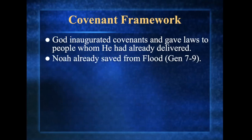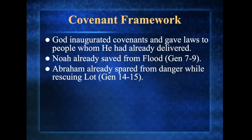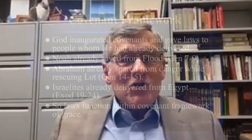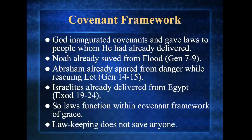God inaugurated covenants and gave laws to people whom he had already delivered. Noah was already saved from the flood, then God gave him ongoing stipulations. Abraham was already spared from danger while rescuing Lot, then God established the covenant with Abraham. The Israelites were already delivered from Egypt — as God said at the beginning of Exodus 20, just before the Ten Commandments: 'I have brought you out of the land of Egypt, delivered you on eagles' wings. Therefore, you shall have no other gods before me.' The law is for saved people — not in order to save them. So God's laws function within the covenant framework of grace. Law-keeping does not save anyone.